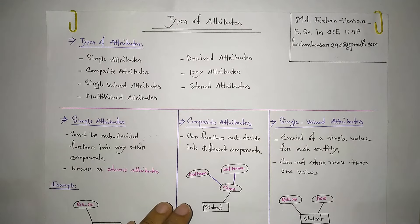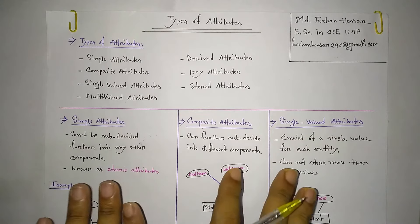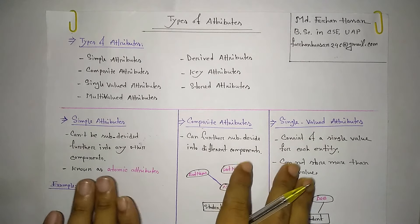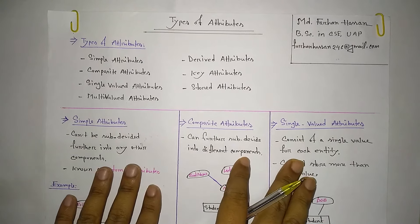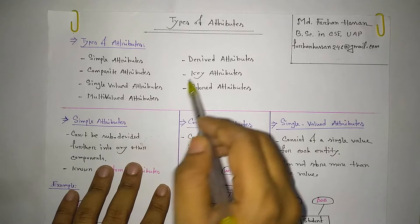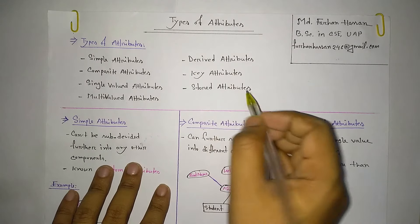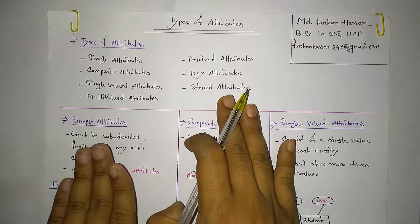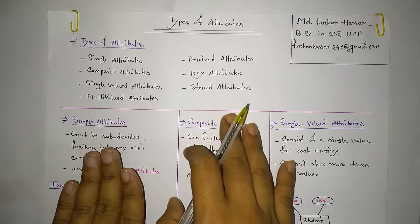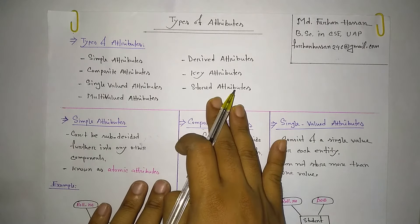Hello everyone, I'm Amanda. Today we are going to discuss attributes. Attributes are of different types: composite attributes, single-valued attributes, multi-valued attributes, derived attributes, key attributes.